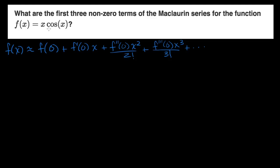What we want to do is find the first three non-zero terms of the Maclaurin series for cosine of x, and then just multiply that by x. Because x cosine of x is the same as x times the Maclaurin expansion for cosine of x — the first three terms of the Maclaurin expansion for x cosine of x is just x times the first three terms of the Maclaurin expansion for cosine of x.